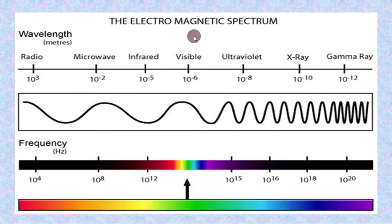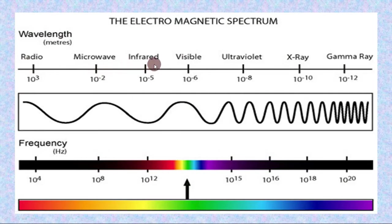The electromagnetic spectrum includes radio, microwave, infrared, visible, ultraviolet, X-ray, and gamma ray frequencies. These are the different types of frequencies within the electromagnetic spectrum.